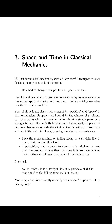Then, ignoring the effect of air resistance, I see the stone moving or falling down in a straight line in space. But on the other hand, a pedestrian who happens to observe this mischievous deed from the ground notices that the stone falls from the moving train to the embankment in a parabolic curve in space. I now ask: in reality, is it a straight line or a parabola that the positions of the falling stone make in space?